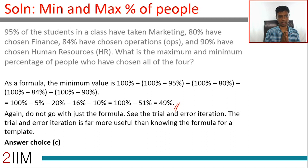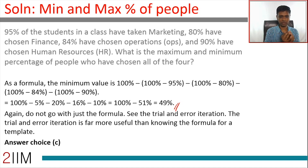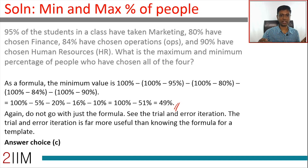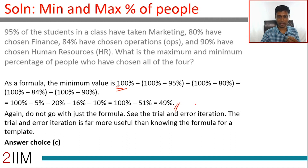The intuition: 5% have not taken marketing, 20% have not taken finance, 16% have not taken ops, and 10% have not taken HR. If there is no overlap among these 'not taken' groups, then 5 + 20 + 16 + 10 = 51% are excluded, and the remaining 49% is the intersection. Don't just memorize the formula — understand the intuition beneath it, because that's what lets you iterate and play with the question.